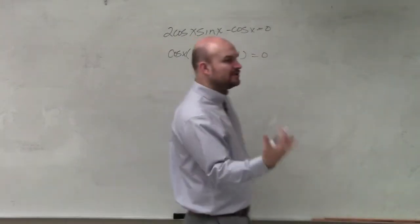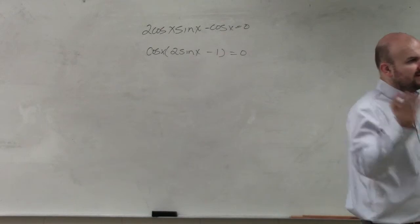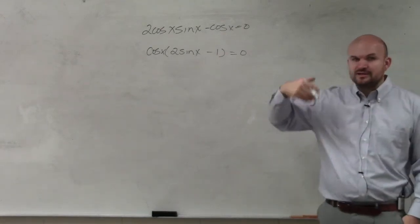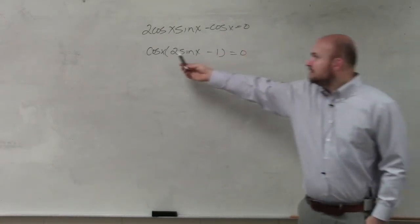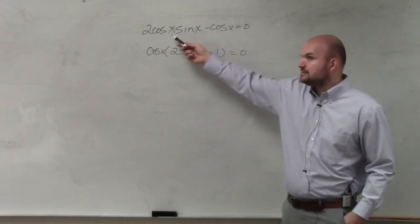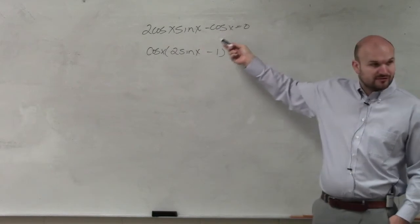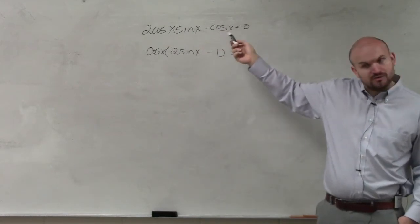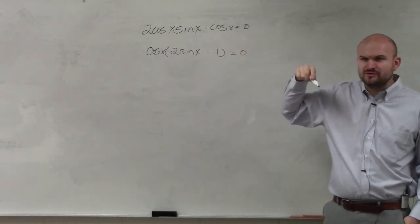And again, guys, remember, you can always check your answer to factoring by multiplying it back out. Does cosine of x times 2 sine of x give you 2 cosine of x sine of x? Yes. Does cosine of x times negative 1 give you negative cosine of x? Yes. So always check your work if you're kind of a little bit confused.